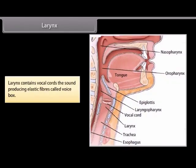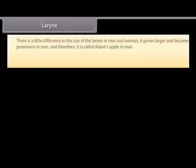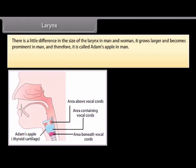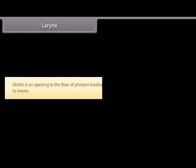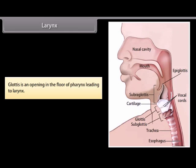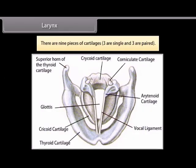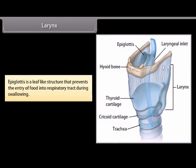The larynx contains vocal cords — sound-producing elastic fibers called the voice box. There is a little difference in the size of the larynx in men and women; it grows larger and becomes prominent in men and is therefore called Adam's apple. The human larynx consists of the glottis, cartilages, hyoid bone, thyroid membrane, vocal cords, and laryngeal ligaments and muscles. Glottis is an opening in the floor of the pharynx leading to the larynx. There are nine pieces of cartilages — three are single and three are paired. Epiglottis is a leaf-like structure that prevents the entry of food into the respiratory tract during swallowing.